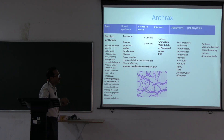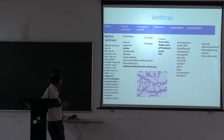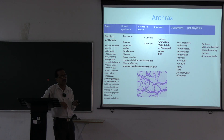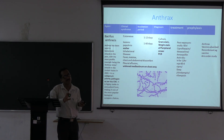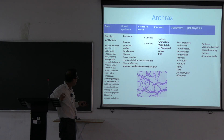Treatment of anthrax: ciprofloxacin or doxycycline; if IV, either ciprofloxacin, doxycycline, amoxicillin, or clindamycin can be used. Cutaneous anthrax presents with a black eschar. When used as a biological weapon, pulmonary anthrax is the most common form, presenting with respiratory symptoms.